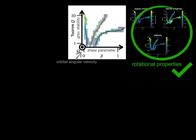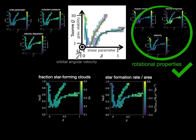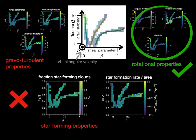On the other hand, the gravoturbulent and star-forming properties of the clouds are unaffected. In terms of their collapse and star formation that results, the molecular clouds are decoupled from the large-scale dynamical evolution of the galaxy.